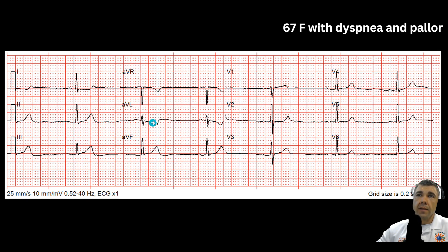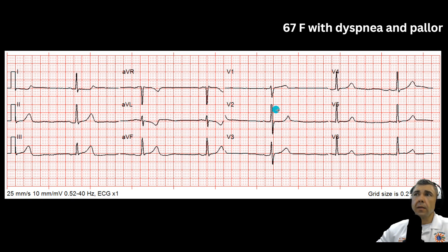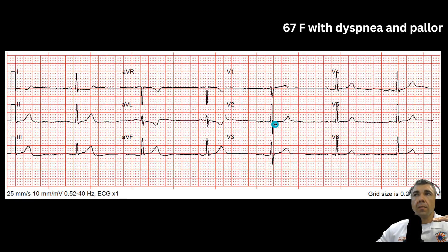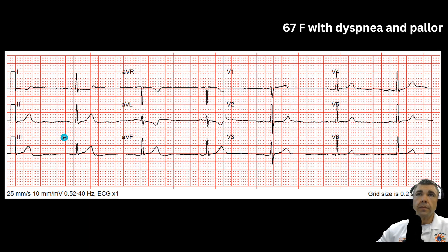The next thing that's going to happen is that AVL change gets deeper, and then the inferior leads will start to elevate — probably lead 3 first. You also have a very flat ST segment in V2 with a tall R-wave. You shouldn't have a tall R-wave in V2 — that's called early R-wave progression, meaning your precordial axis has rotated. This is actually a posterior Q-wave, because V1 and V2 are reciprocal to the posterior wall. If you flip them, this becomes a Q-wave, and that flat ST segment will depress further because it's a posterior infarction. So that is an early inferior wall MI.